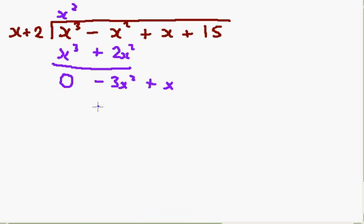And now I think, well how many x's could I now get into minus 3x squared? Well, I can get minus 3x. Because x times minus 3x is minus 3x squared. OK, and now I multiply through by minus 3x. Minus 3x times x is minus 3x squared, sorry. And I've got minus 3x times 2, which is minus 6x.